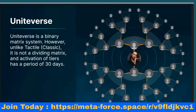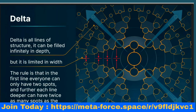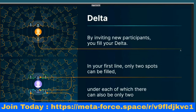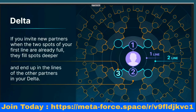There are nine tiers total, with five orbits each, and the orbits form a matrix. Spots with active tiers on the nearest lines enter the orbits, and there is an infinite amount of lines. UniVerse is a binary matrix system; however, unlike classic binary matrices, it is not a divided matrix. Activation of tiers has a period of 30 days. Delta is all lines of structure — it can be filled infinitely in depth but is limited in width, with only two spots per first line.